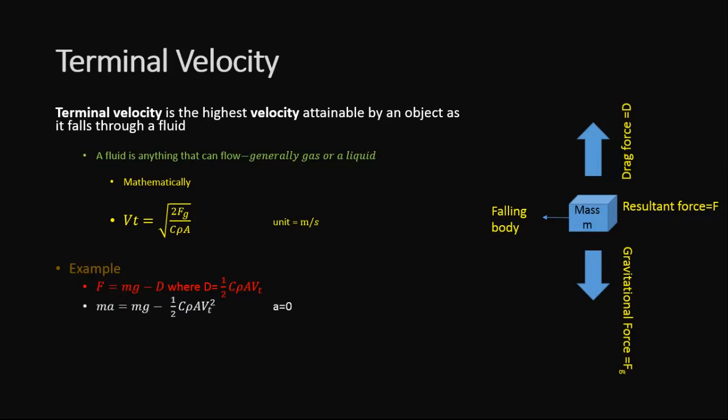Here we know that F = MA. Substituting the MA value for F, the equation becomes MA = mg - (1/2)CρAVt². For finding the terminal velocity, we set A = 0, which is the resultant acceleration.